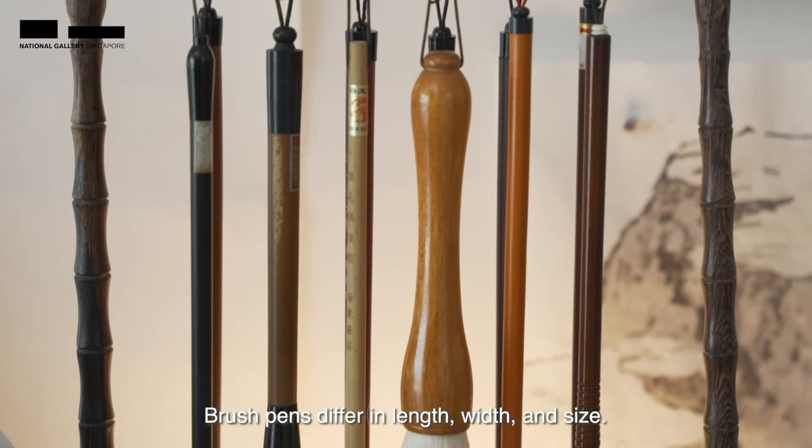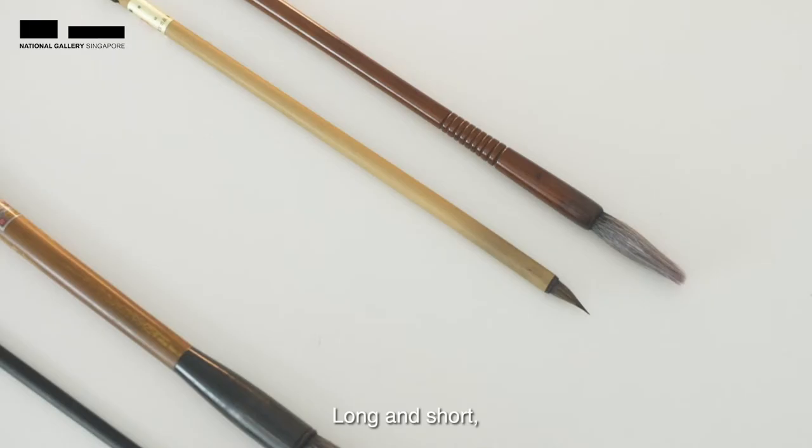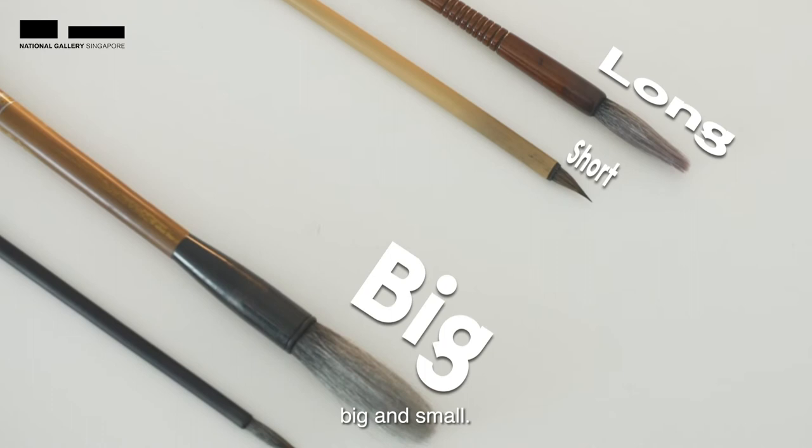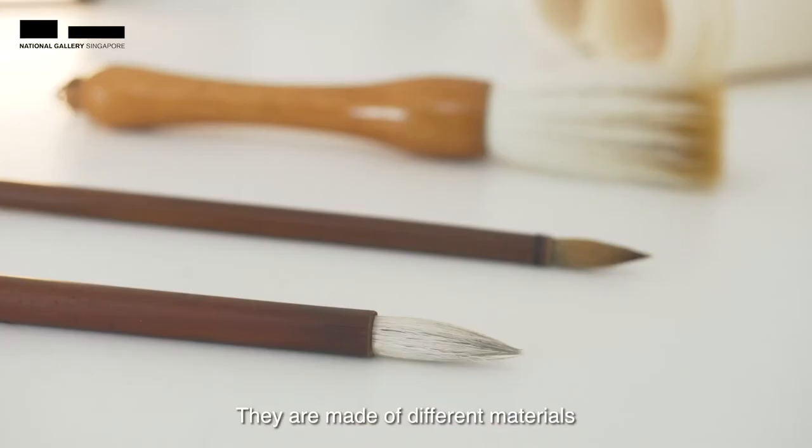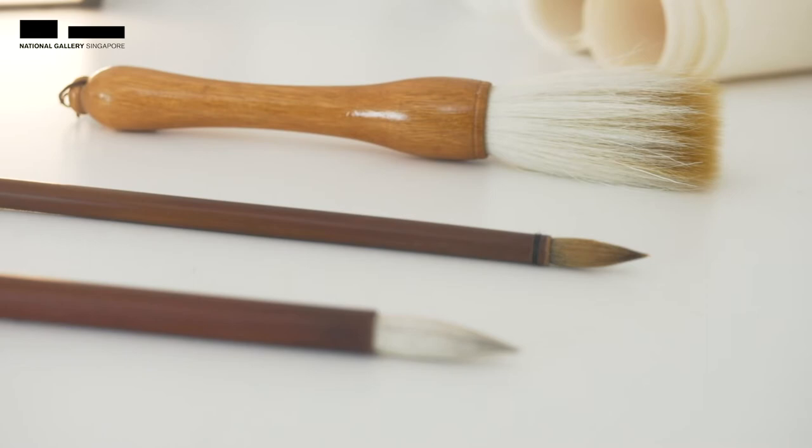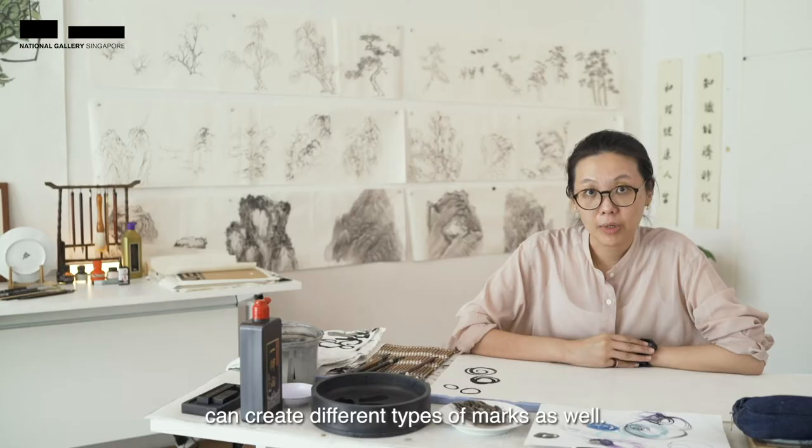Brush pens differ in length, width and size. Long and short, big and small. They are made of different materials such as goat hair, weasel hair, synthetic materials or a mix. So, different brush pens can create different types of marks as well.